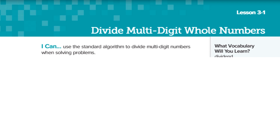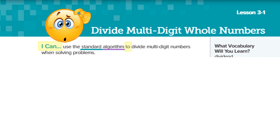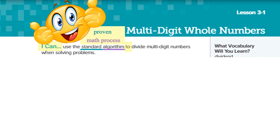As we get into lesson 3.1, we see that we're simply going to divide multi-digit whole numbers. We want to look at our objective — the I can statement. It says: I can use the standard algorithm. That's where we probably need to stop, because the terminology of standard algorithm probably gets confusing. Standard just means it's a proven routine — it's been shown it can be used over and over again. An algorithm is just a big fancy word that means a math process. So we're saying: I can use the standard algorithm, the proven math process, to divide multiple digit numbers.